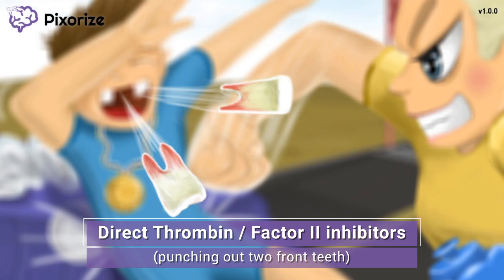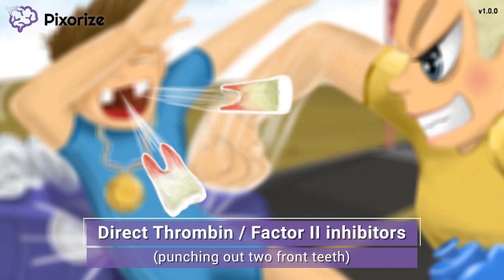Recall that thrombin is a critical enzyme in secondary hemostasis. During secondary hemostasis, thrombin converts fibrinogen — loosely holding a platelet plug together — into insoluble fibrin, transforming the platelet plug into a stable blood clot. When you see the second place marathoner punching out the winner's two front teeth, you are reminded that direct thrombin inhibitors punch out the activity of factor 2 by directly blocking it. This is why DTIs are anticoagulants — they inhibit factor 2a from forming stable blood clots.